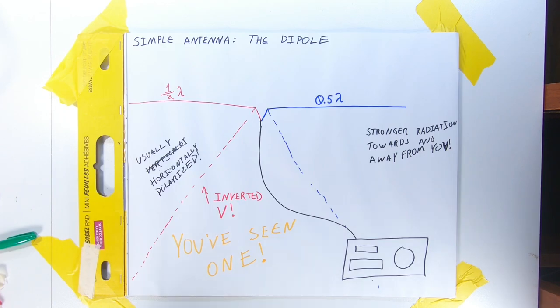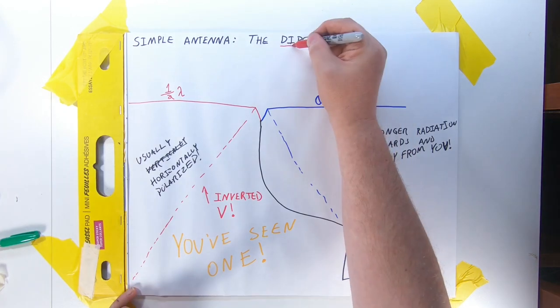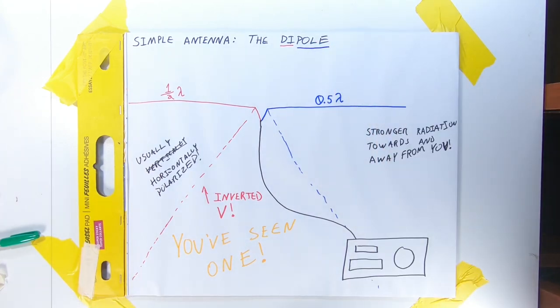The dipole is the simplest antenna. It is a die pole. Two poles. Get the joke? Cool? Alright, let's move on.